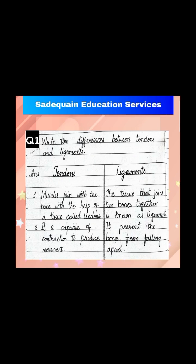You have to copy down this question. I am repeating again. Learn and write the answer with me. Tendons — first point: muscles join with the bone with the help of a tissue called tendons. Second point: it is capable of contraction to produce movement. Ligaments — first point: the tissue that joins two bones together is known as ligament. Second point: it prevents the bones from falling apart.